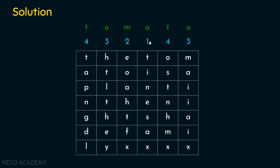So how did we get this? We used the order of the alphabet. A comes first, followed by M, followed by O, and followed by T. So we have assigned the numbers 1 for A, 2 for M, 3 for O, and 4 for T. Now we need to start generating the ciphertext.